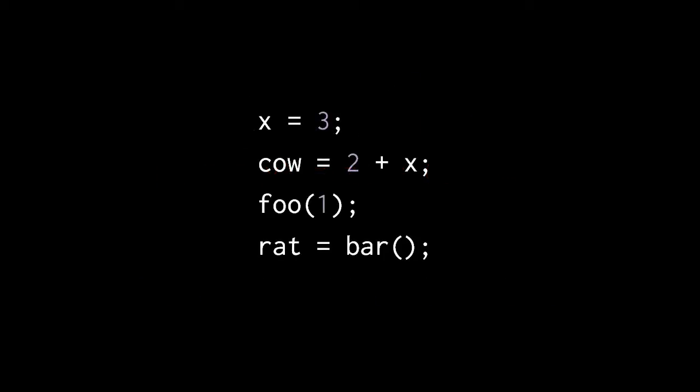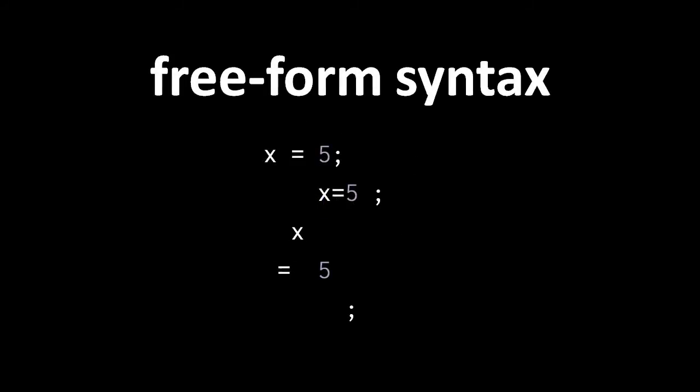Expression statements in JavaScript all end in semicolons. Here we have four expression statements. The first assigns the value 3 to x, the second assigns 2 plus x to cow, the third calls the function foo with the argument 1, and the fourth calls bar with no argument and assigns its returned value to rat.